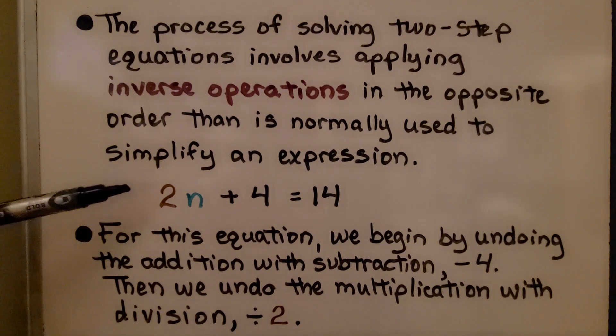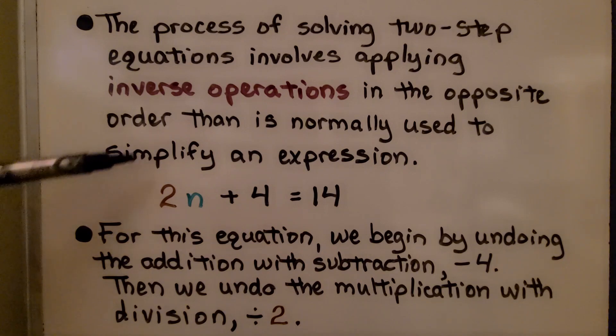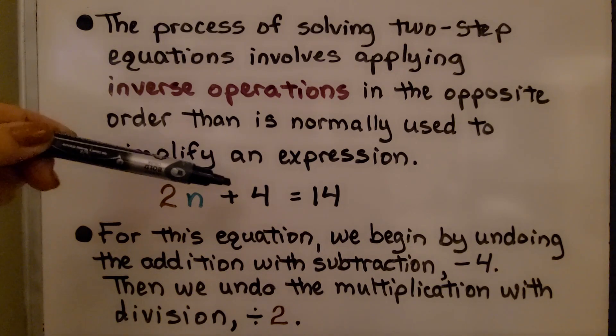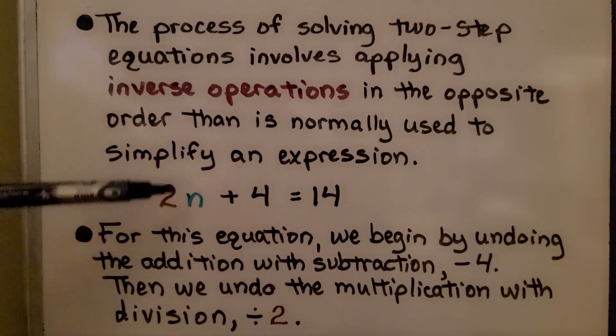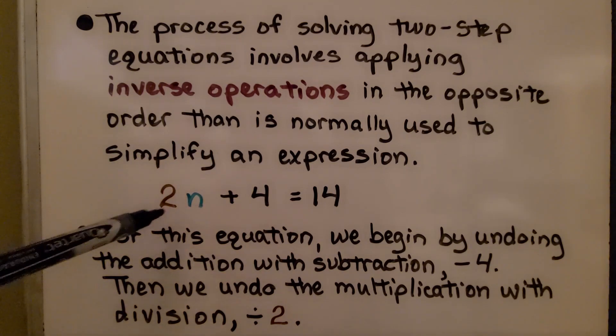We have 2n plus 4 is equal to 14. For this equation, we begin by undoing the addition with subtraction, minus 4. Then we undo the multiplication with division, divided by 2.